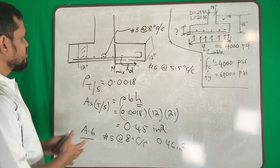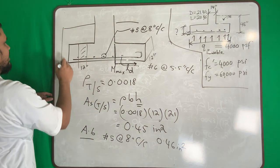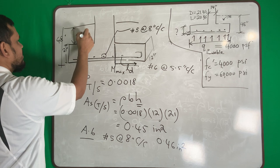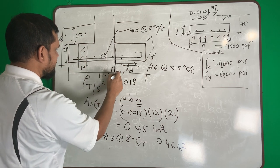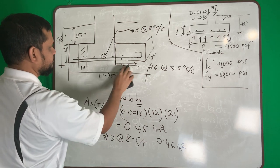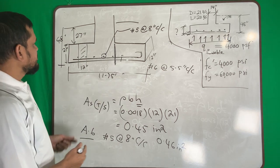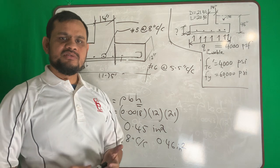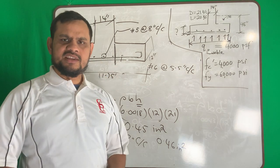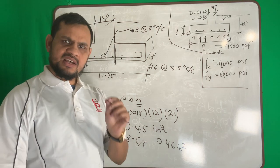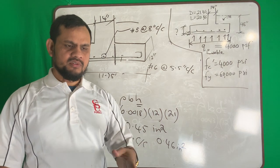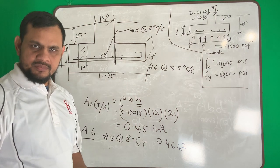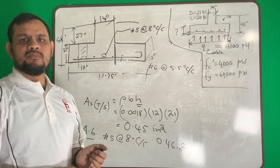To summarize the final footing dimensions: total depth from surface = 48 inches; footing thickness = 21 inches; soil cover above footing = 27 inches; footing width = 11.75 feet; wall thickness = 14 inches. Main reinforcement: #6 at 5.5 inches; temperature reinforcement: #5 at 8 inches. Other footing types — square, rectangular — follow a very similar procedure with small differences we will cover in upcoming videos.